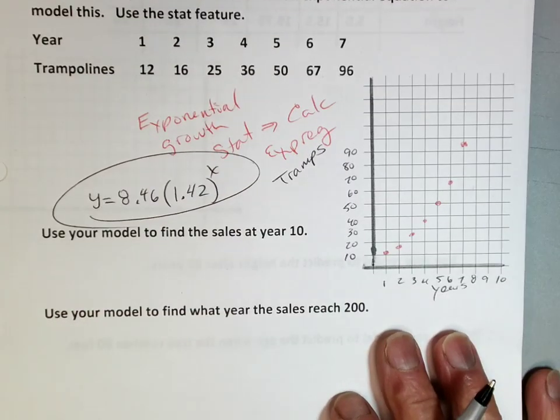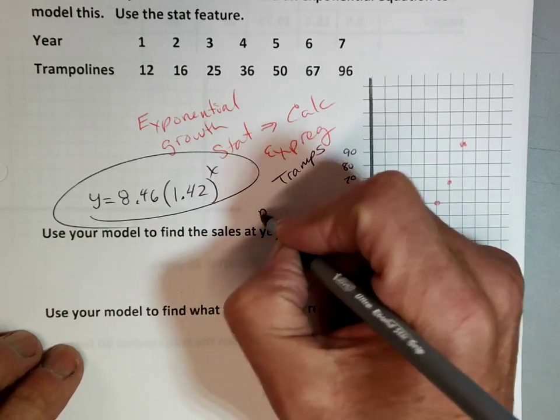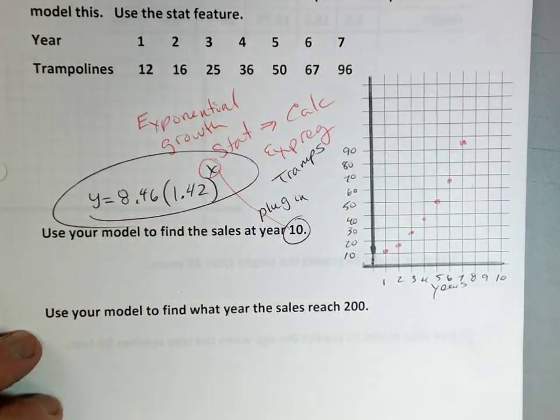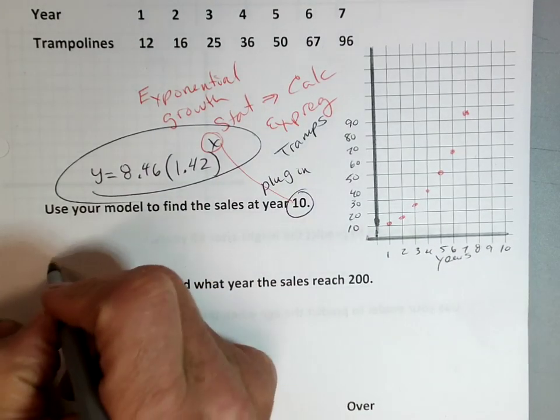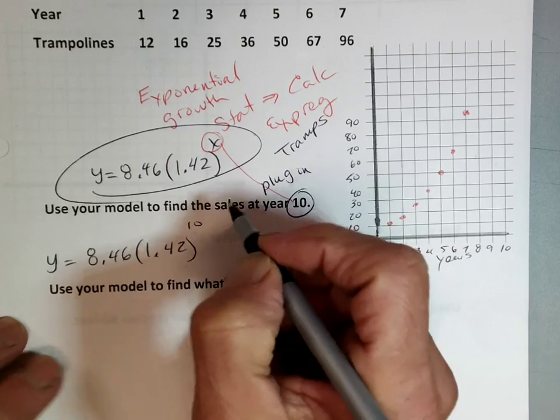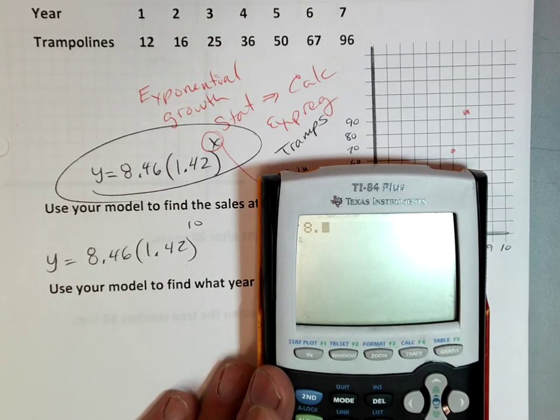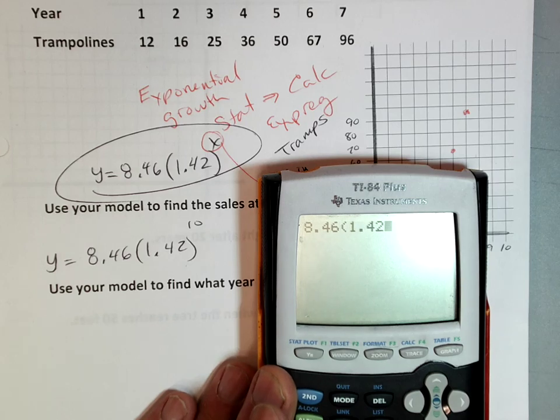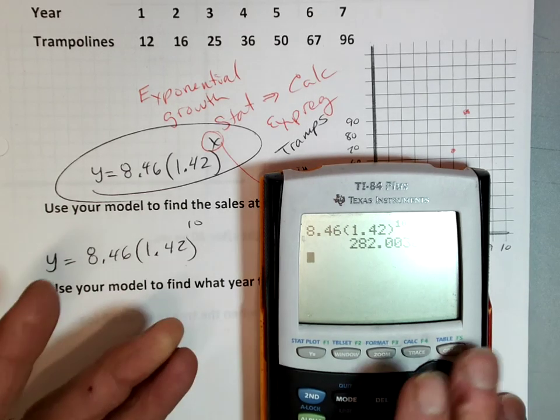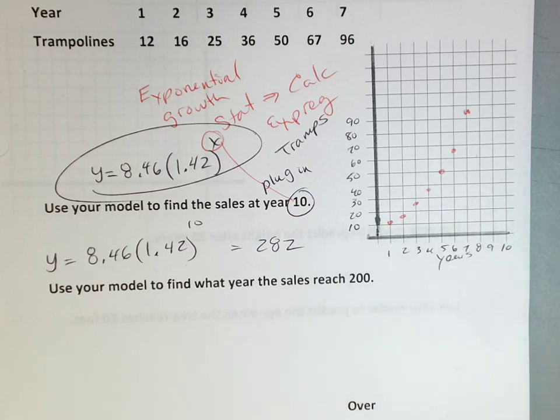Use your model to find the sales at 10 years. Well, that's pretty easy. Just plug it in. I'm going to plug in 10, plug my 10 right into x to get what the sales will be at 10 years. Y equals 8.46 times 1.42 to the 10 power. I'll let my calculator do the work. 282. So we're going to sell 282 trampolines in year 10. That's not bad. We're growing.